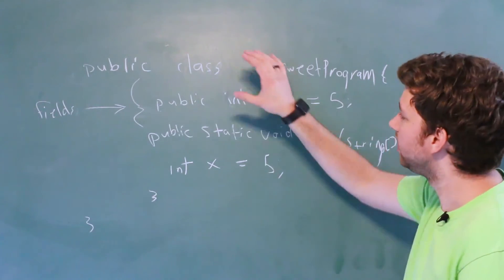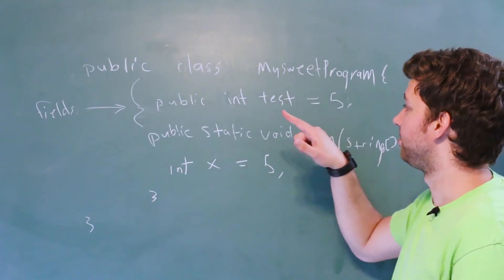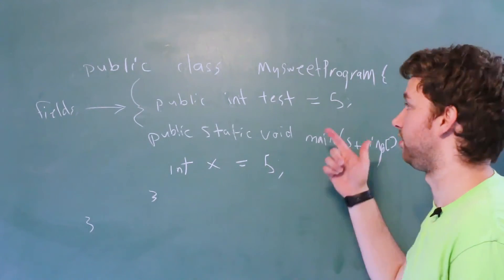So if someone were to make an instance of this class, so they made an object of this, this field would be available to them and it would default to the value five.